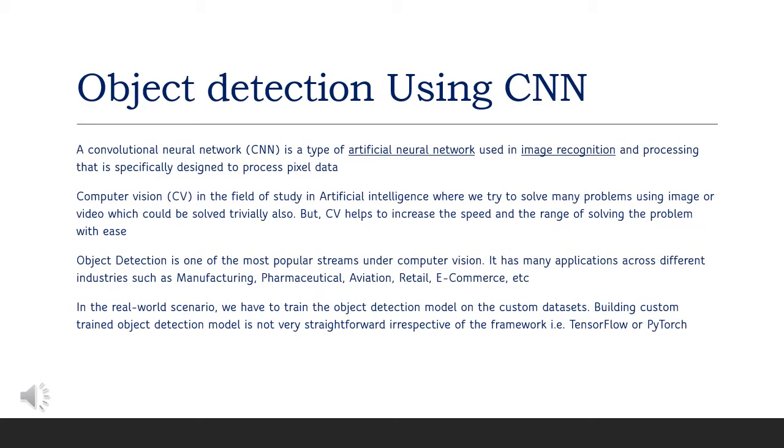Object detection using CNN or Convolutional Neural Network. So CNN is a type of artificial neural network, which is basically used for object detection in images.